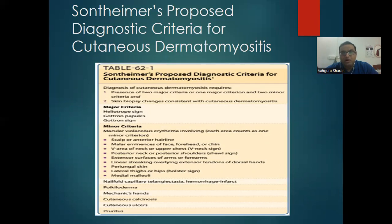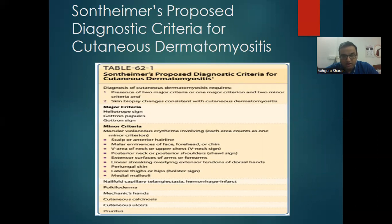Sontheimer proposed diagnostic criteria for cutaneous dermatomyositis requiring two major criteria, or one major and two minor criteria, plus skin biopsy changes consistent with dermatomyositis. Major criteria: heliotrope rash and Gottron's papules/sign. Minor criteria include macular violaceous erythema on the scalp, face, posterior neck, posterior shoulders (shawl sign), extensors of arms and forearms, linear streaking overlying extensors of hand tendons, lateral thighs (holster sign), nail fold capillary telangiectasias, poikiloderma, mechanic's hands, calcinosis, and digital ulcers.